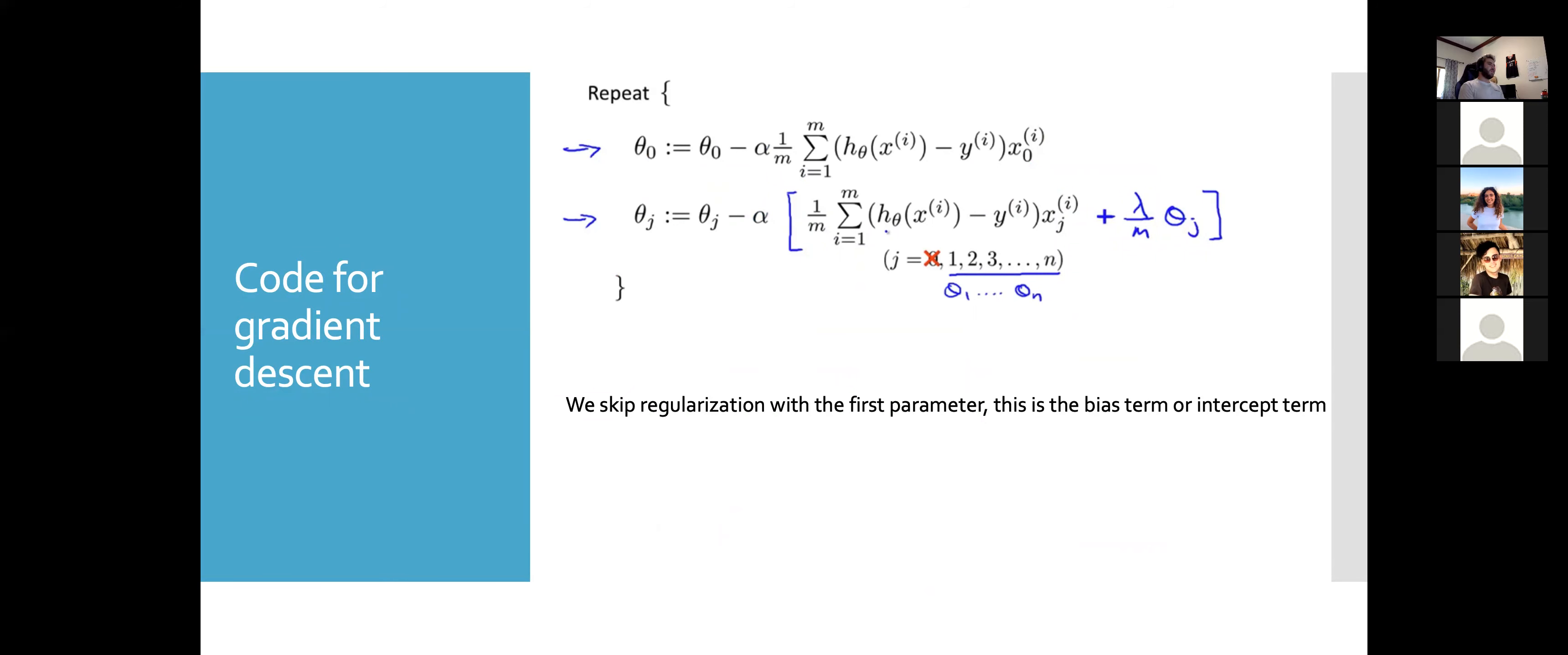If we wanted to implement this, our code for gradient descent would look exactly the same, except we add on our regularization parameter on when we're updating theta j. But for regularization, we want to skip the regularization with the first parameter, which is our intercept term. You could regularize all parameters, but it's generally recommended to skip the intercept term, so you don't have any issues later on.